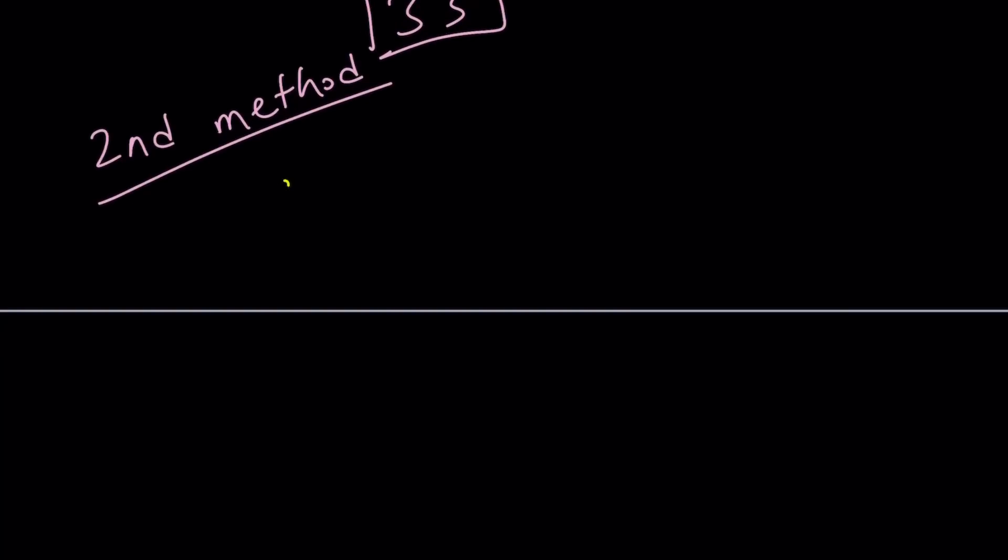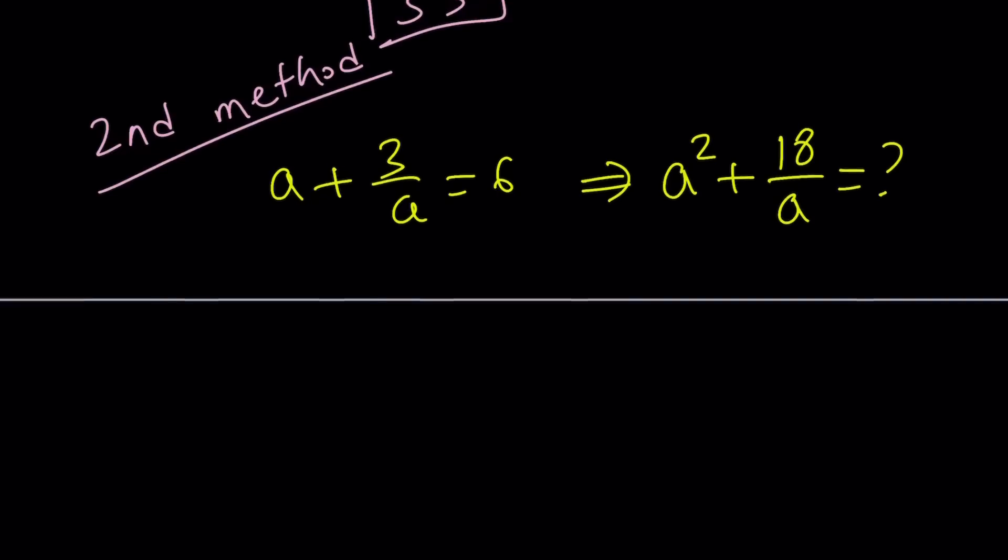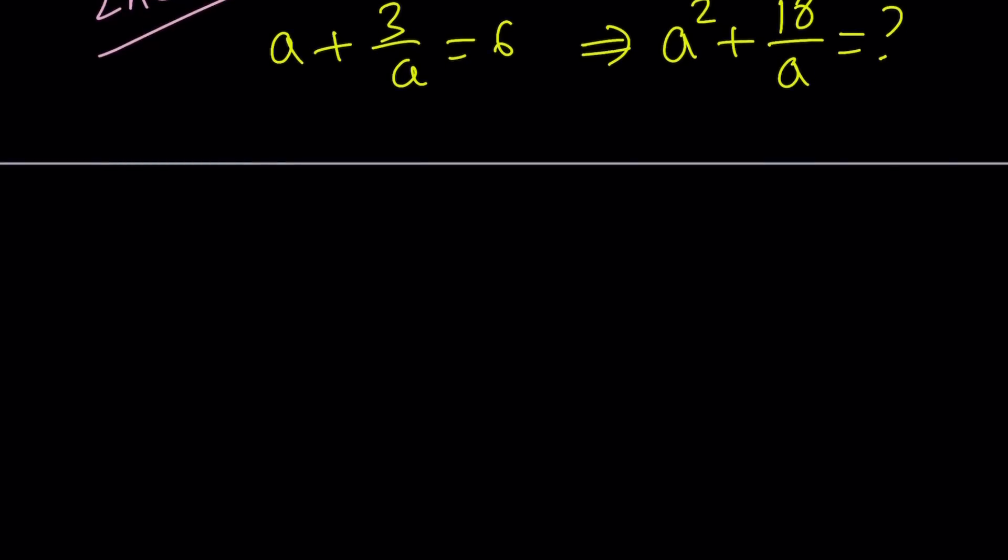So let's go ahead and take a look at the second method. And what is really cool about the second method is because it's the second method. You know the second method is almost always the coolest one. So let me rewrite the equations. A plus 3 over A equals 6. And from here, we're supposed to evaluate A squared plus 18 over A. I really love the second method, by the way.